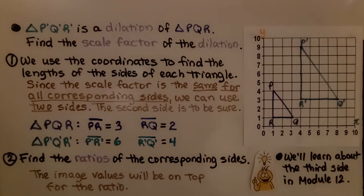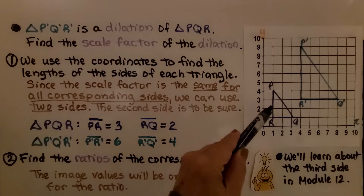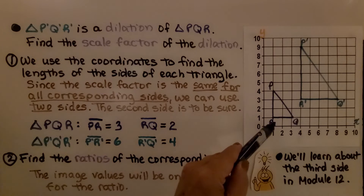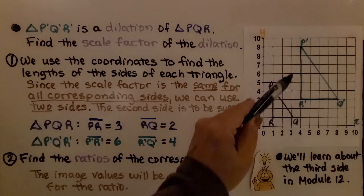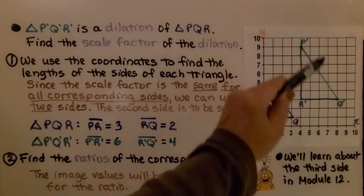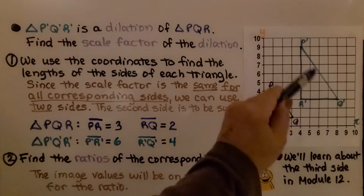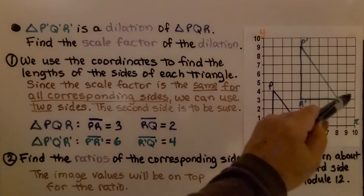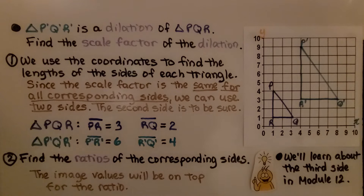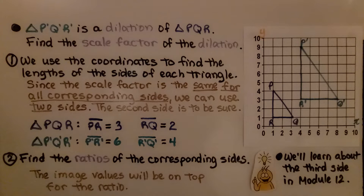Let's first take a look at this diagram. We've got triangle PQR, and we can see we have P'Q'R'. We know this is the image — it's got the prime tick marks. And triangle P'Q'R' is a dilation of triangle PQR. We need to find the scale factor of the dilation.